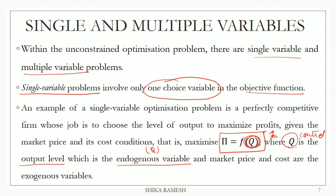In the case of firms, the market price and cost conditions are given from outside — such as wages paid to laborers or the rental price of capital. The firms cannot control wages or the rental price. So the cost conditions are exogenous variables.